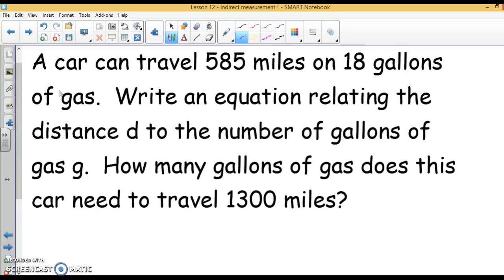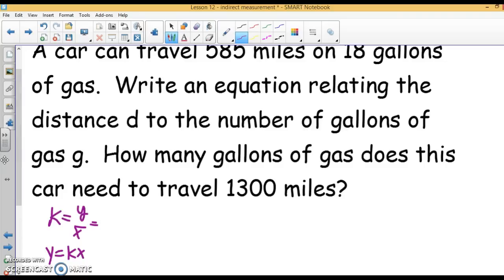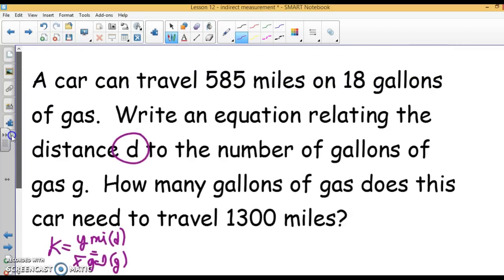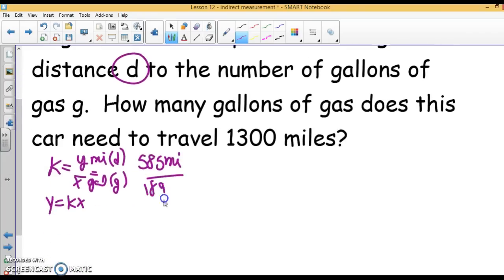Let's remember that our equation to find a unit rate is k equals y over x. And our equation to write a proportional relationship is y equals kx. We're going to do miles, which they're telling us they want us to use d, to gallons, which they want us to use g. It says we're going 585 miles in 18 gallons. If you divide that, 585 divided by 18 is 32.5 miles per gallon. That is our unit rate or rate of change or constant of proportionality.